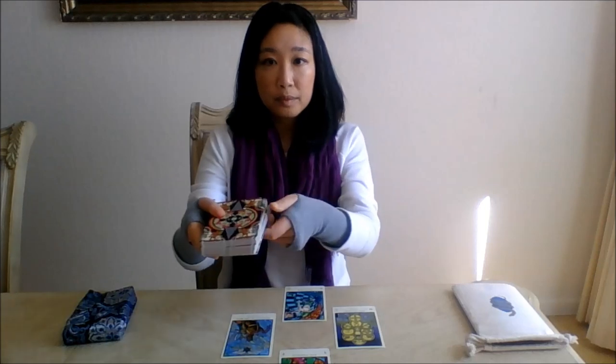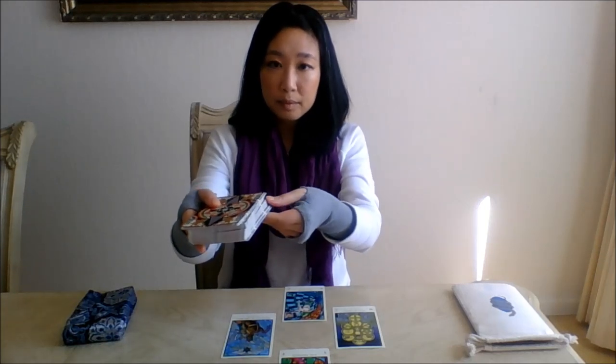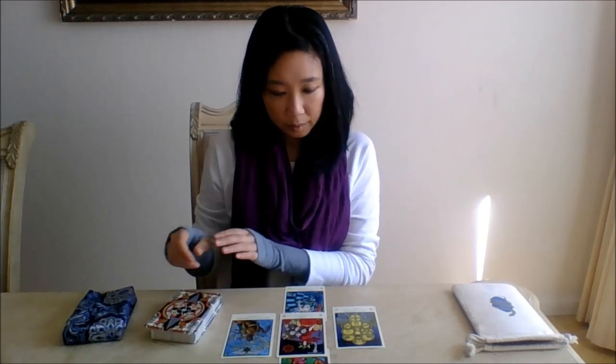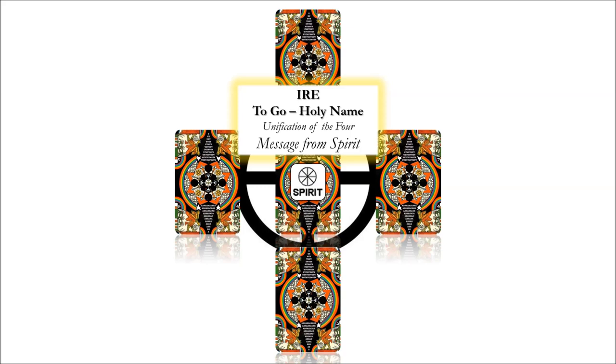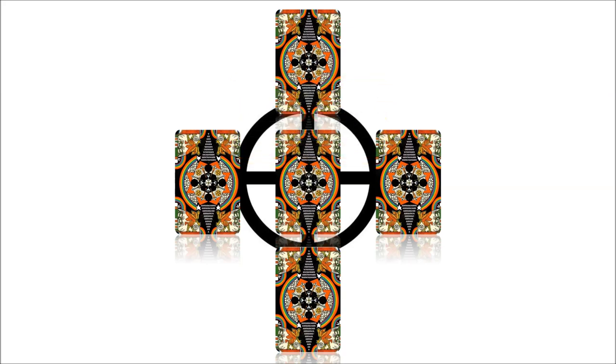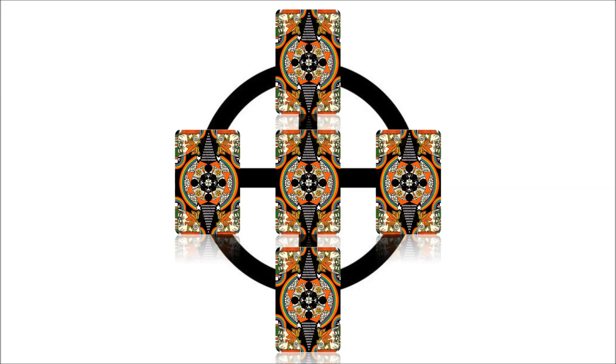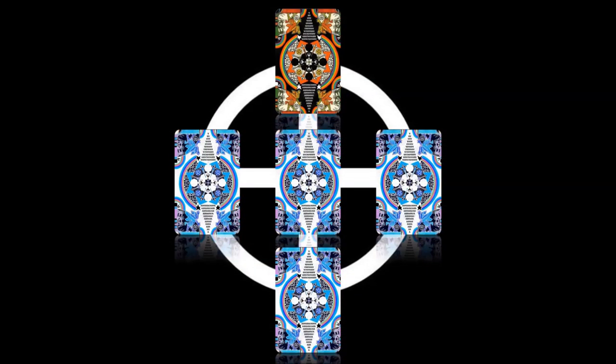From your tarot deck, withdraw the bottommost card in the pile and set it into place at the center of your cross. This is the fifth card and the fifth power. The fifth card is Ire — the unification of the four previous cards combined as the holy name. This is a message from spirit. Now, looking at the cross of cards in front of you, place yourself in the position of querent, not the tarot reader. Instead, visualize and feel the presence of Haru, of a great angel, a divine emanation conveying to you the message.